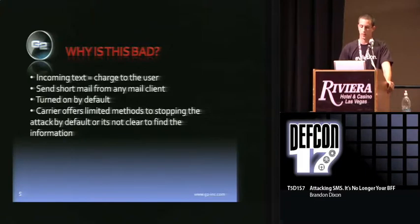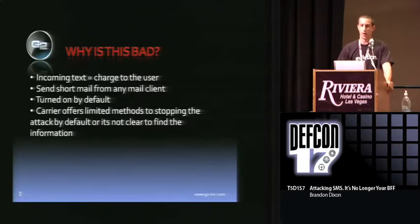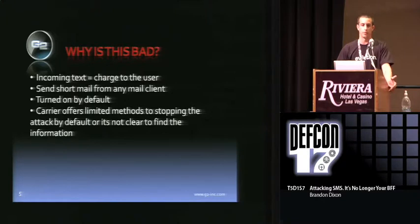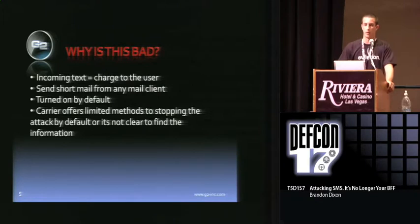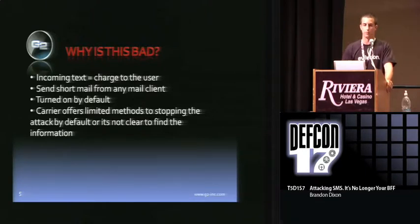The carriers offer limited methods to stopping the attack by default. The carriers give you the ability through some web interfaces to actually block 10 to 15 domains, block certain emails, block certain numbers. The problem is that I can generate a random email with a domain name of 30 random characters every single time, and it's going to make it through. When I did my initial testing, all the messages were different, obviously coming from a different source. So blocking 10 to 15 addresses doesn't matter because I can generate 10 to 15 new ones in five seconds. The other information is just not clearly available — it was fairly obfuscated within all the other things they offer.